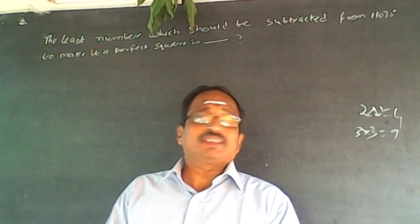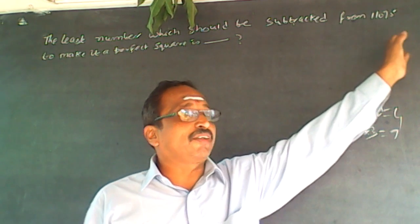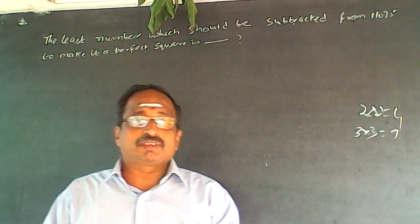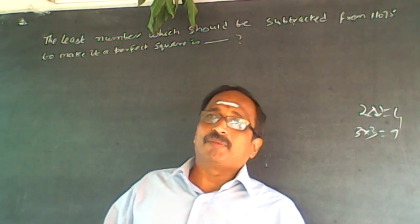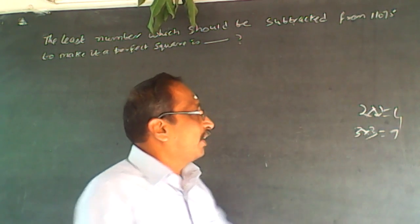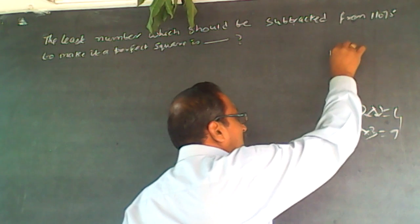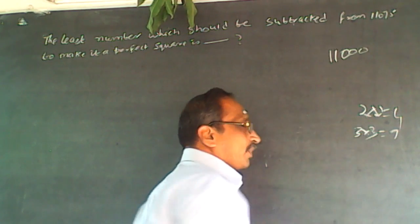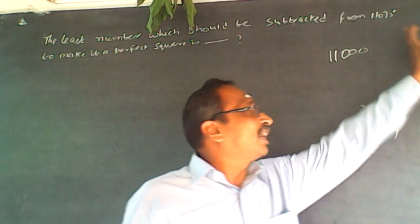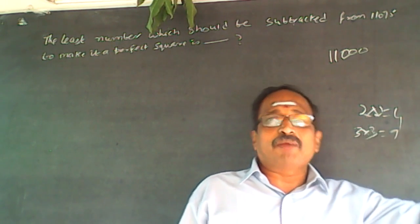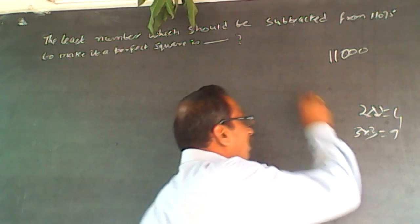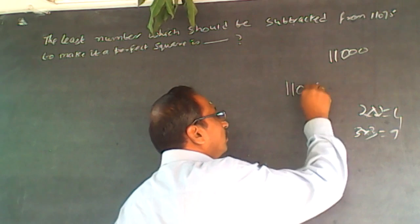So what happens is, because it is 11075, think of the nearest round digit number so it will be easier to multiply. Think about the nearest round number which will be easier to multiply. So this 11075 can be written as 110 into 100.